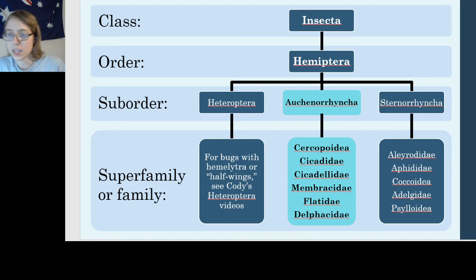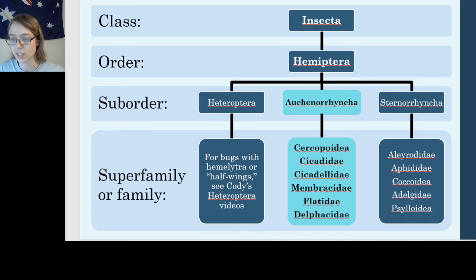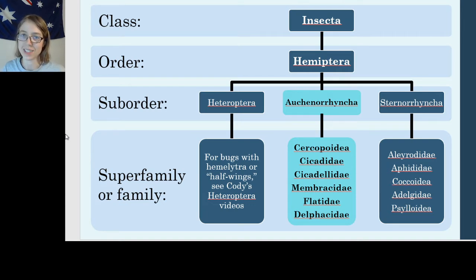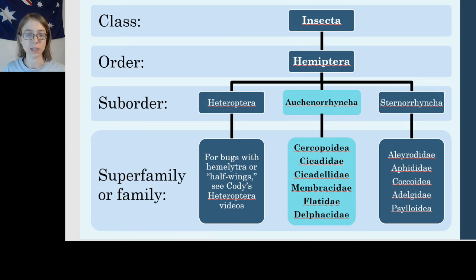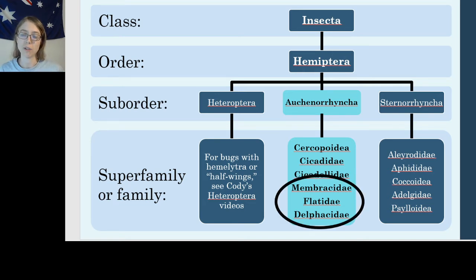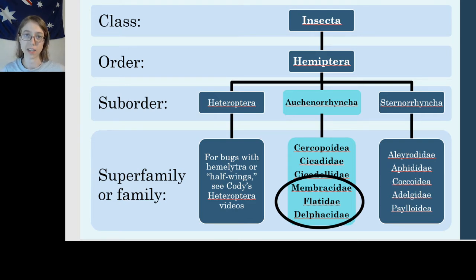To put this in perspective of the Hemiptera family tree, Suborder Auchenorrhyncha is here, and these are the six families I've chosen to focus on for this series. There are many more families than this — these are just the six most common and most interesting I decided to cover for this BioBlitz. In this video in particular, I will be covering our final three families: Membracidae, Flatidae, and Delphacidae.